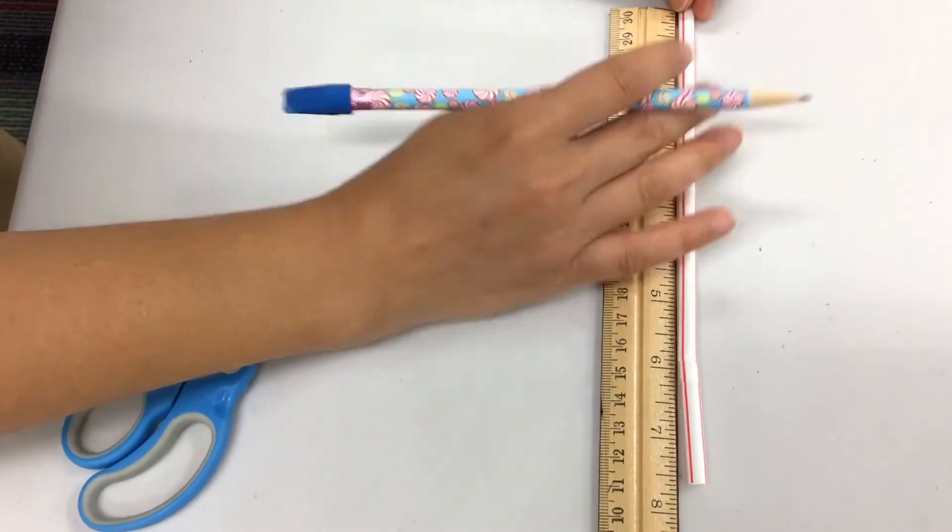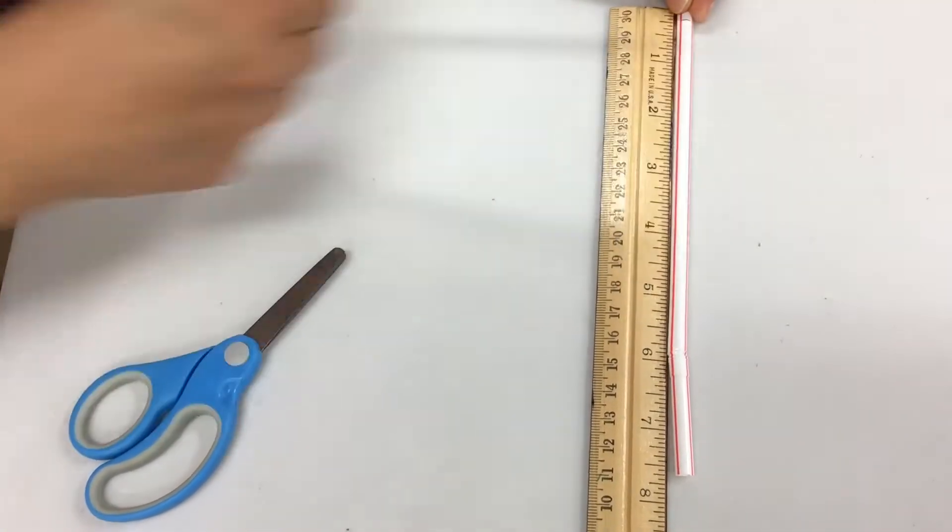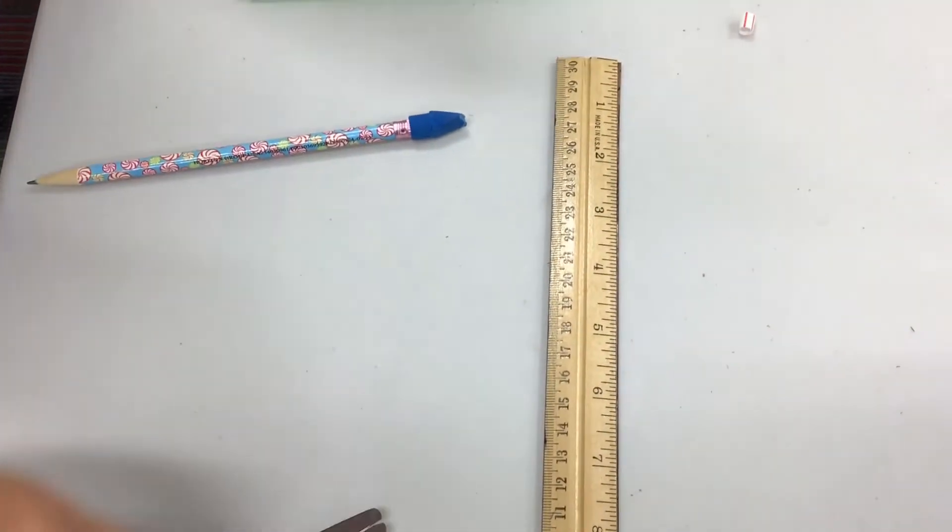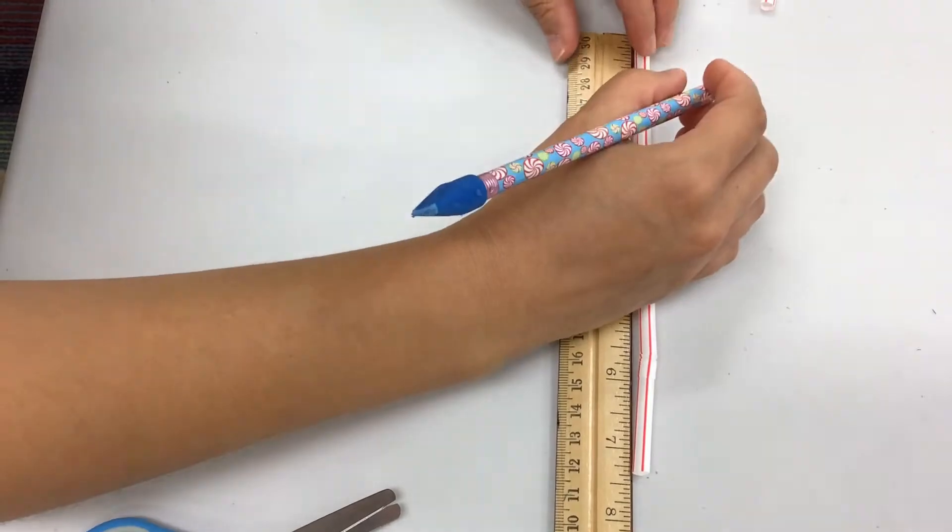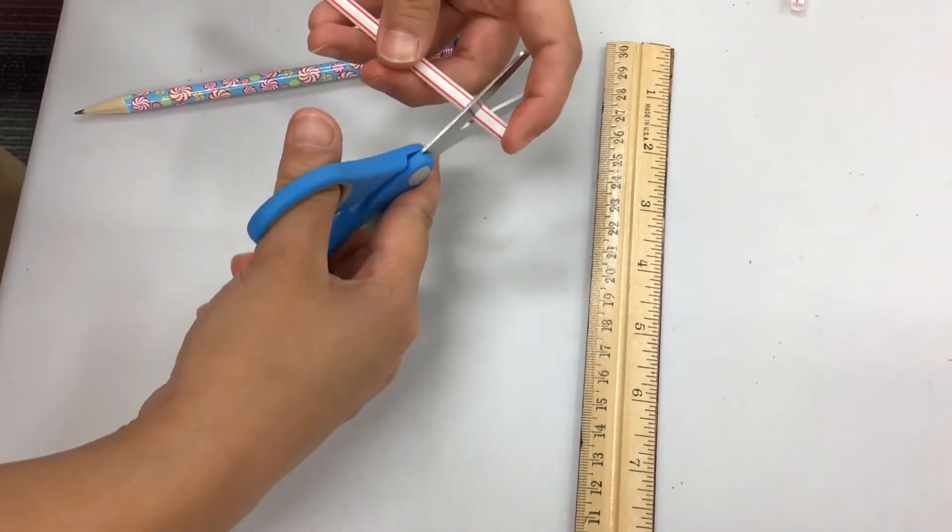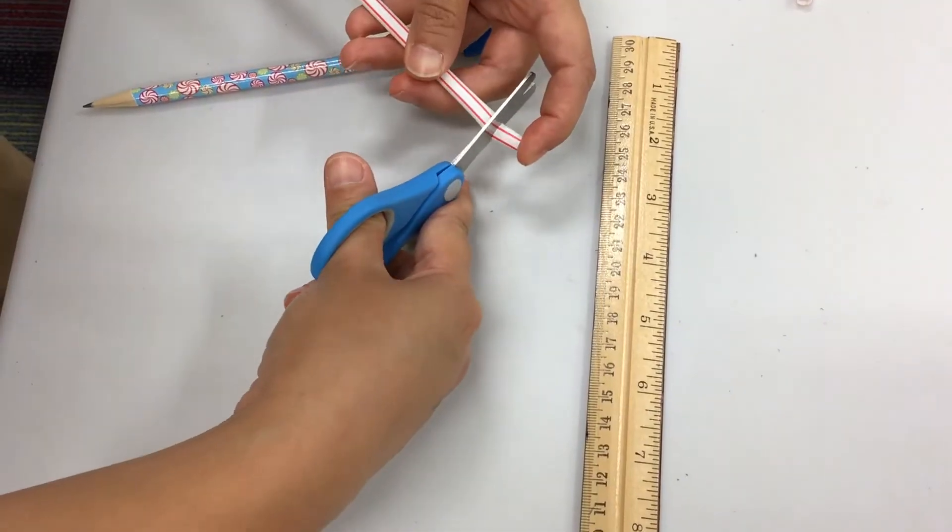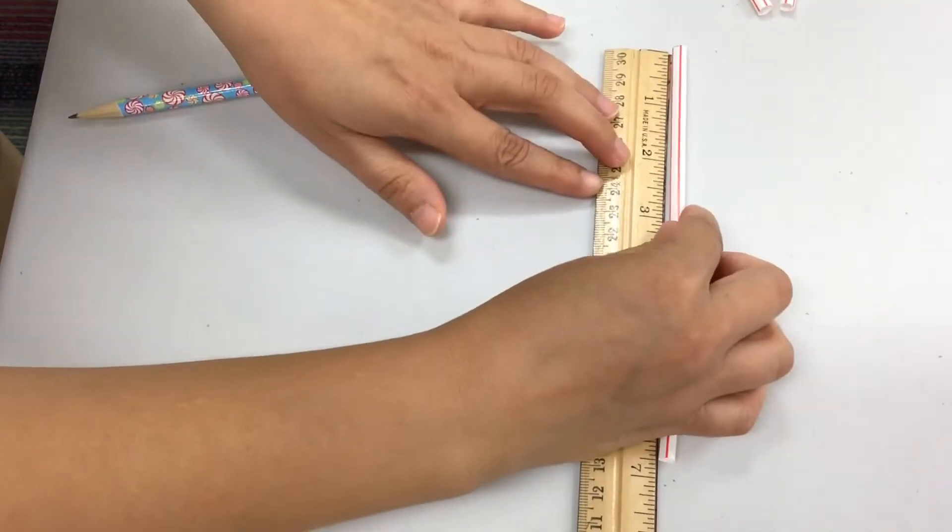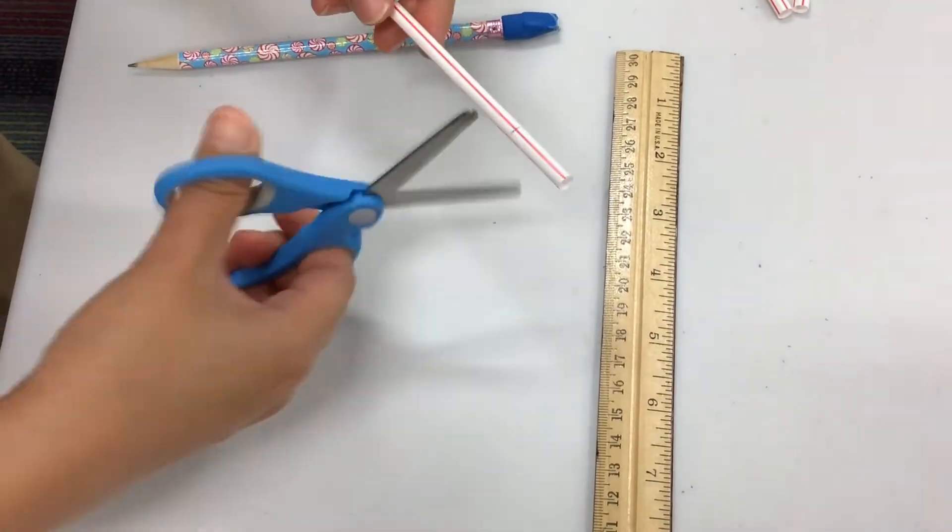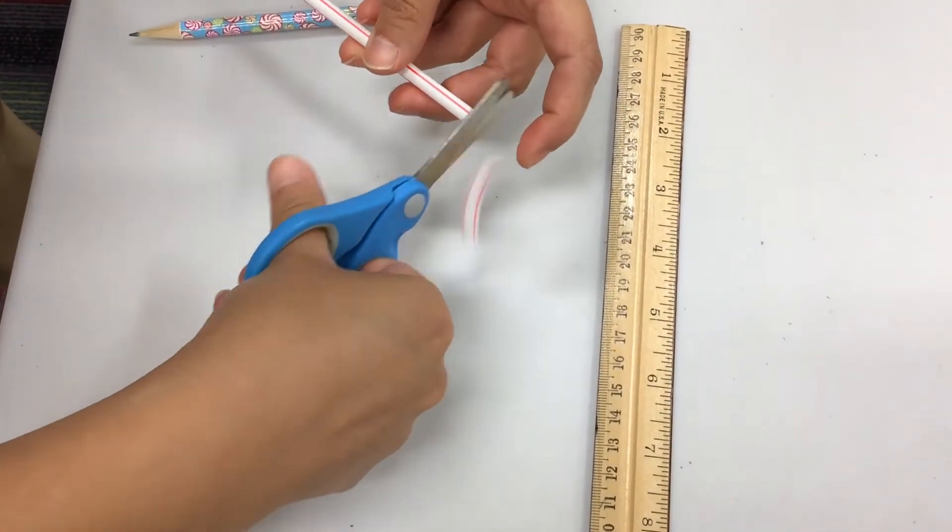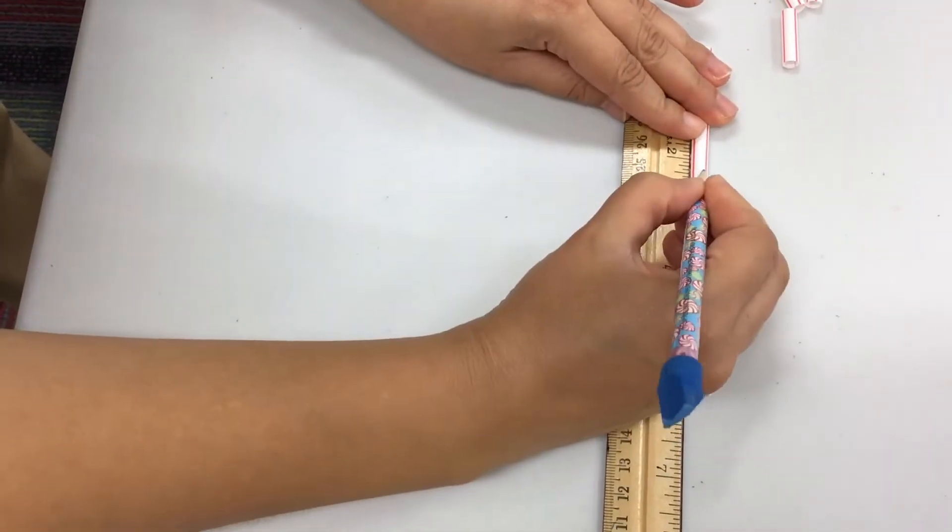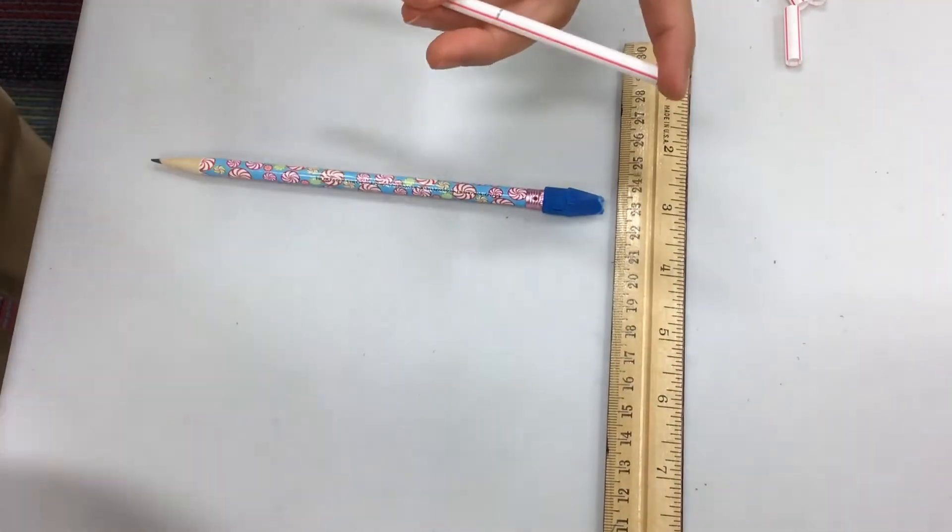Now line up your straw with your ruler and measure one-fourth of an inch and cut it off. Then use the same straw and measure one-half of an inch and cut it off. After that, measure one inch and cut it off. Then the last piece you'll measure two and one-fourth inches and cut it off. So you should have four pieces of the same color and you will repeat this with your other straws.